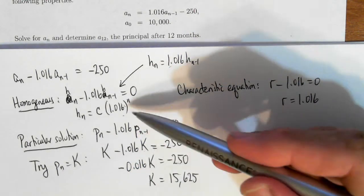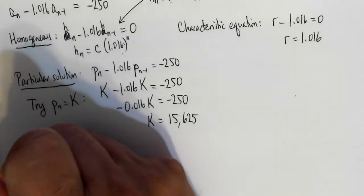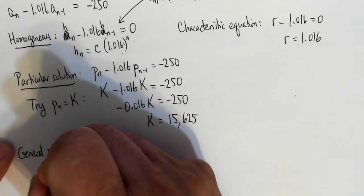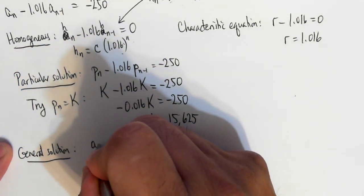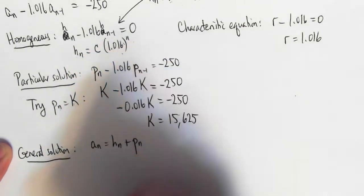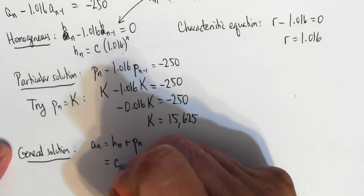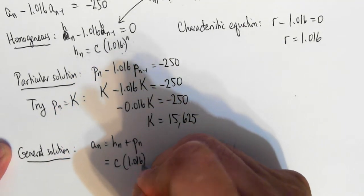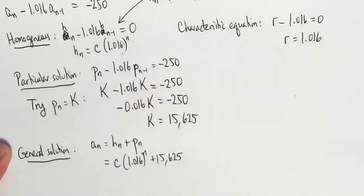So I combine these two things to form my general solution. So the general solution is going to be a_n is equal to the solution for the homogeneous case plus the particular solution I just found, which is going to be the constant, which I've not solved for yet, times 1.016^n plus 15,625.